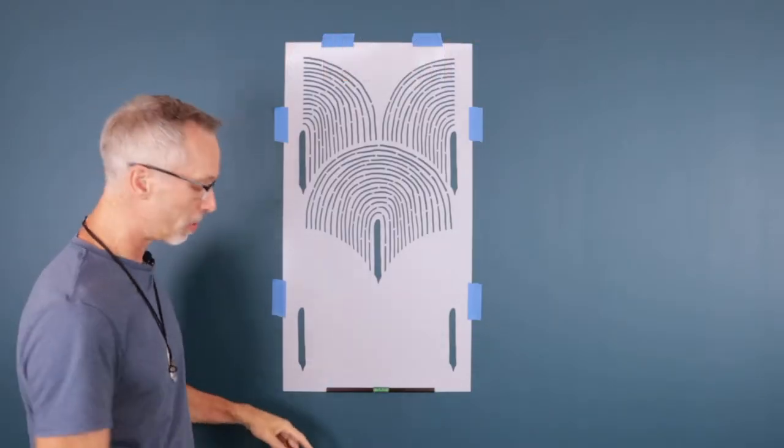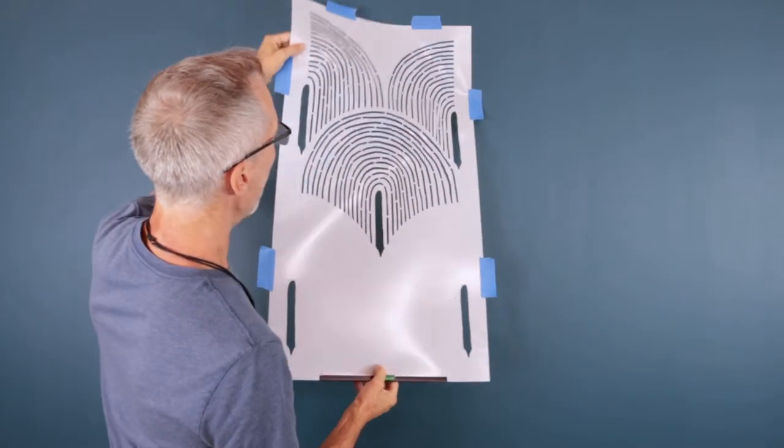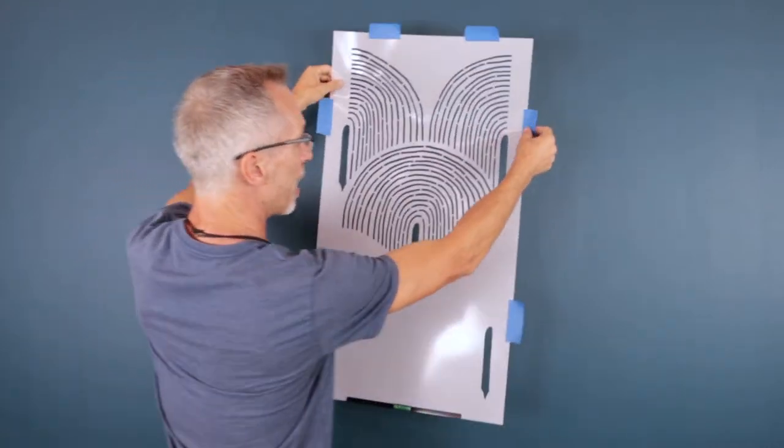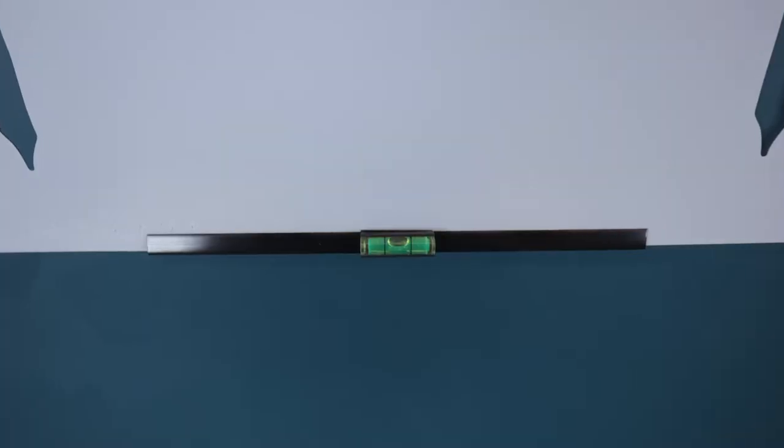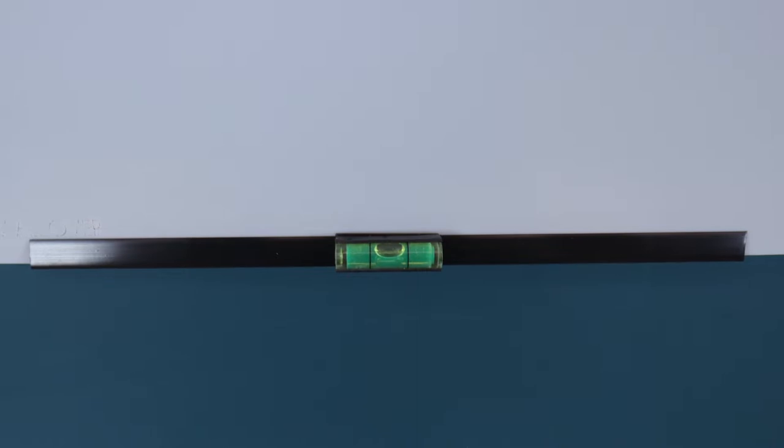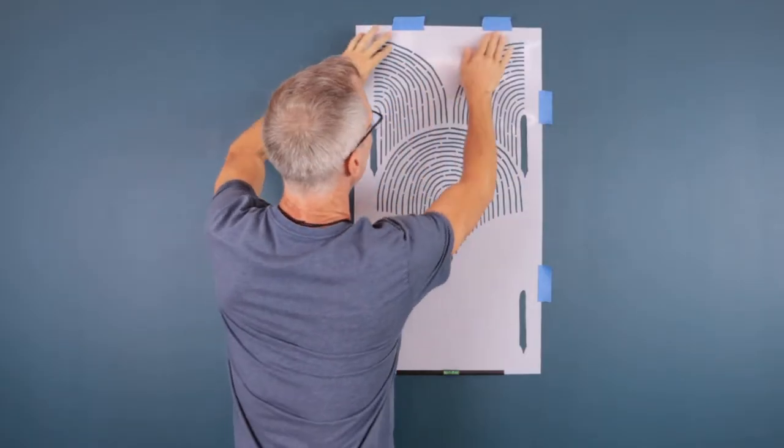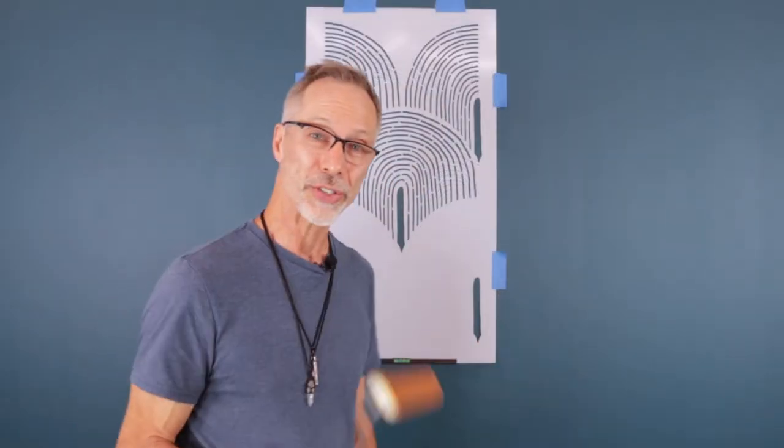And now every time you take this off and then you go to place it back on at your next repeat, you just look down at your bubble and you get it in the middle. Bam, level, and you're ready to stencil.